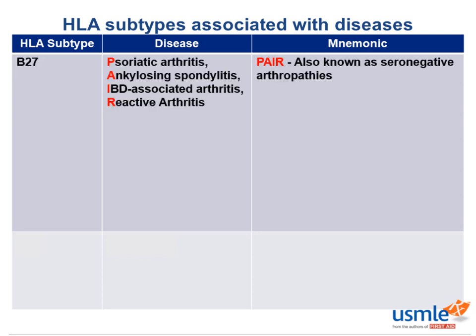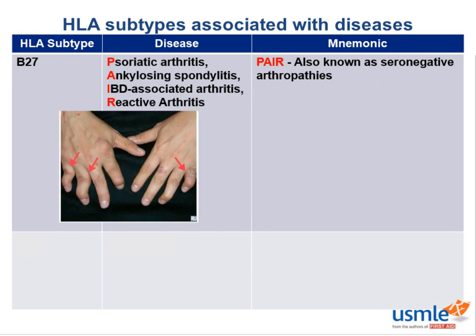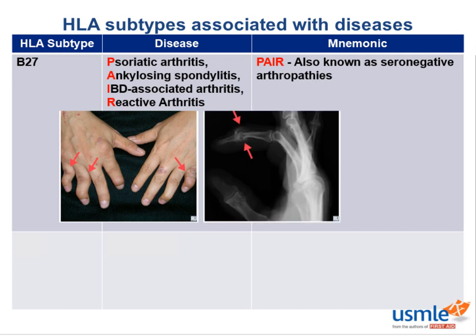HLA-B27 is associated with psoriatic arthritis, ankylosing spondylitis, IBD-associated arthritis, and reactive arthritis — abbreviated as PEAR. These are also known as the seronegative arthropathies. Psoriatic arthritis is associated with skin psoriasis and nail lesions, which are often asymmetric. Patients often present with dactylitis, also known as sausage fingers, which shows on x-ray as a pencil and cup deformity.